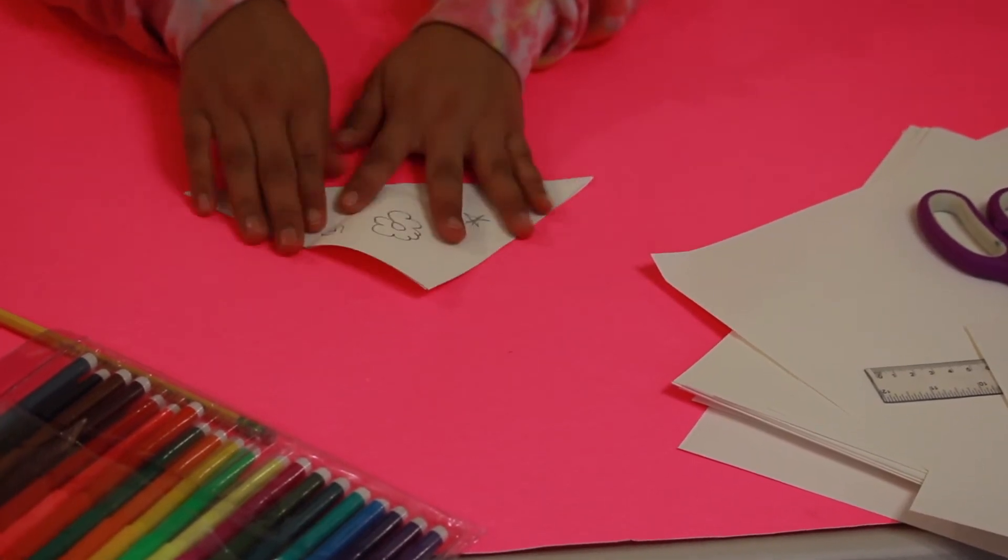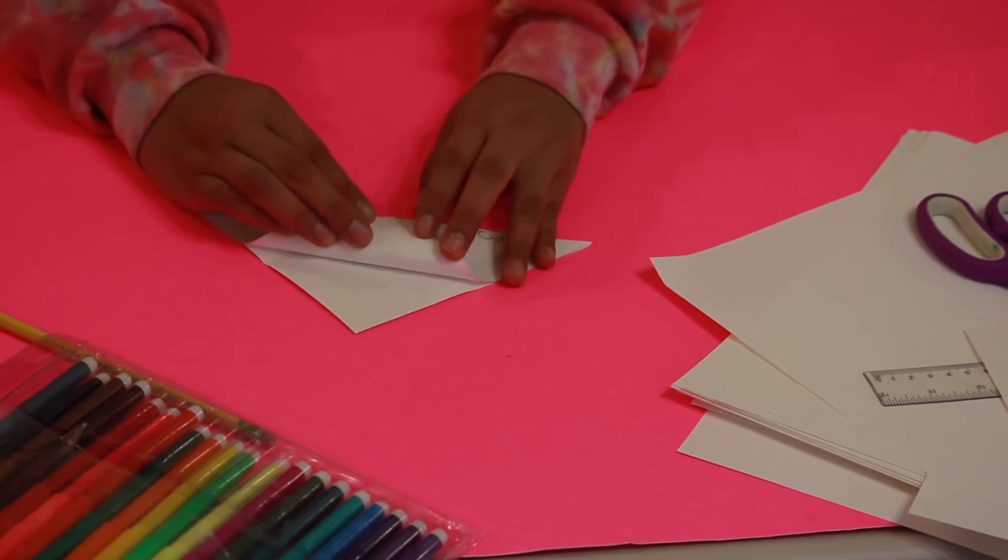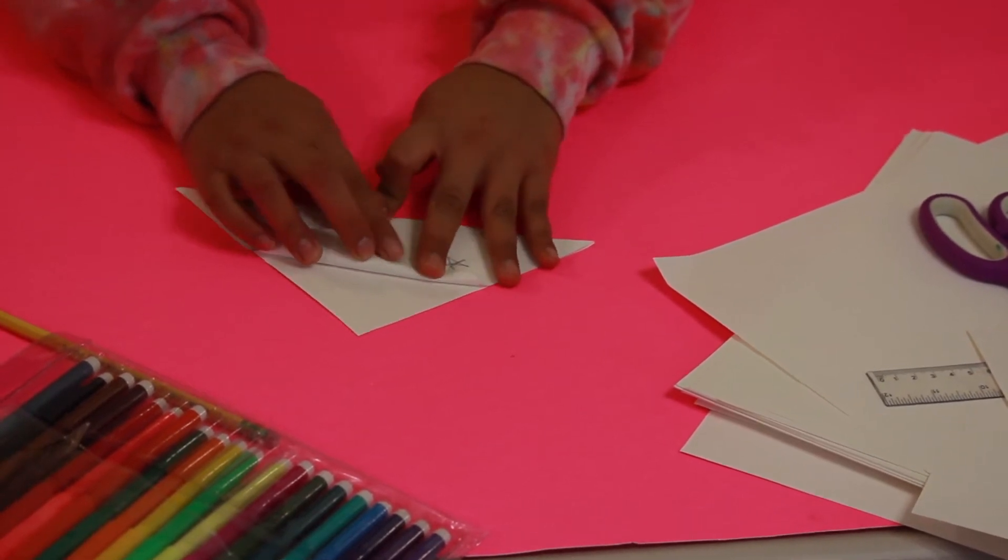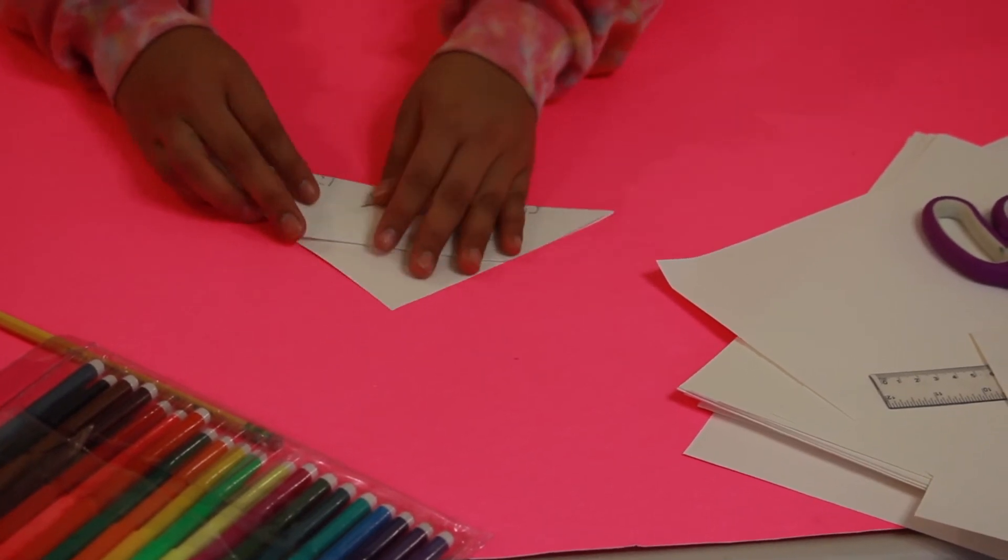And make sure again that it's a cut clean crease. Now I am going to open it up and I'm going to bring just one side down from the top to the bottom making another triangle.